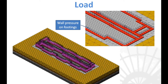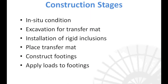The last step of input was to specify the self-weight of the soil and the wall footing loads, applied on top of the footings as pressure to simulate loads from the walls. The construction stages were then defined: first, initial stresses were calculated in the natural condition with self-weight activated and only soils active. Then excavation for the transfer mat was modeled by deactivating that mesh. The rigid inclusions were then activated, followed by reactivation of the transfer mat, activation of the footings, application of loads, and the model was run.